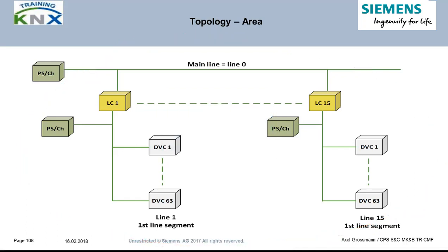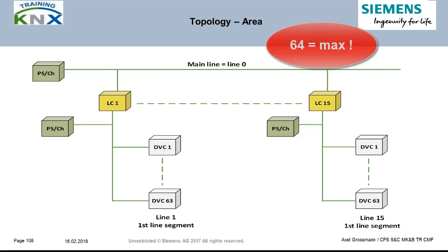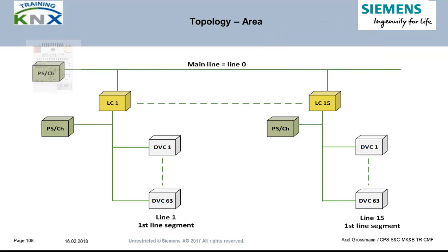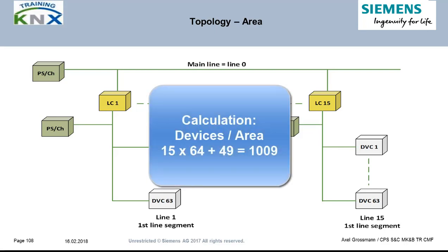All limitations valid for line segments apply also for the main line — not more than 64 devices and a separate suitable KNX power supply. Two lines can be powered by one supply if a separate choke is used for each. The total number of devices in one KNX area is 1009, calculated as 16 × 64 minus 15 couplers — since couplers count twice as they are connected to two lines.